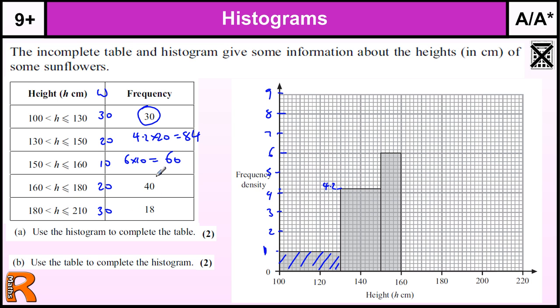And to finish off, we need to be able to work out the height of this bar, which has a frequency of 40. Its width is 20, so it's going from 160 to 180. Its width is 20, so it must be 2 high. Let's actually use a straight line tool for this. So 2 high. So I need to draw in a bar that's 2 high and 20 wide.